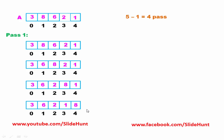At the end of pass 1, 8 is at the correct position. In pass 2, again we scan the array from left to right and compare the current element with the next element. First, we consider 3 at index 0 and compare it with 6 at index 1. 3 is less than 6, so we don't need to swap.